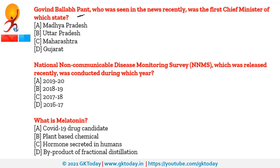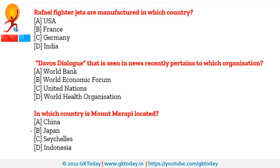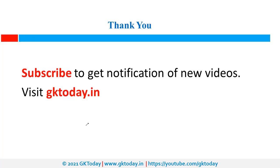Quiz questions for viewers: First, Govind Vallabh Pant was the first Chief Minister of which state? Second, the National Non-Communicable Disease Monitoring Survey was released recently — during which year was it conducted? Third, what is Melatonin? Fourth, Rafale Fighter Jets are manufactured in which country? Fifth, the Davos Dialogue pertains to which organization? Last, in which country is Mount Merapi located?